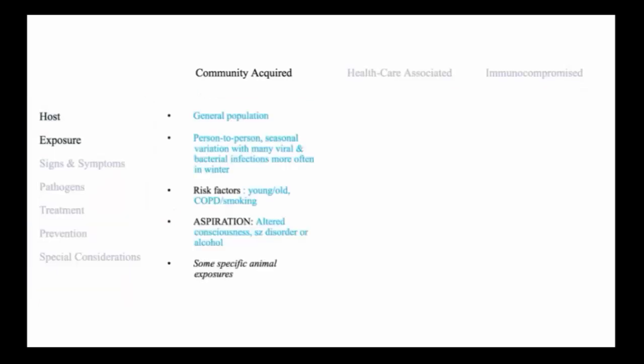By definition, community-acquired pneumonia involves the general population, that is, persons without known preconditions or immunodeficiencies. Generally, it is transmitted person-to-person, often with seasonal variation by many viruses and bacteria. Hence, more often seen in wintertime. The major risk factors for community-acquired pneumonia are extremes in age or lung diseases, including cigarette smoking.